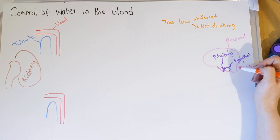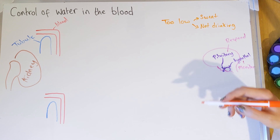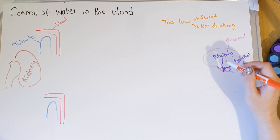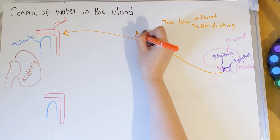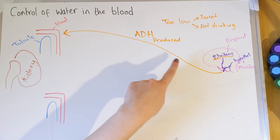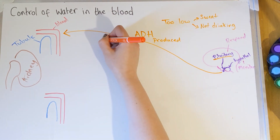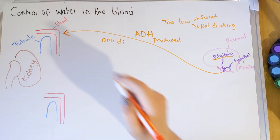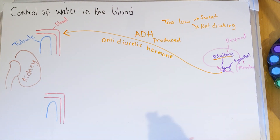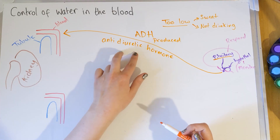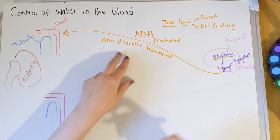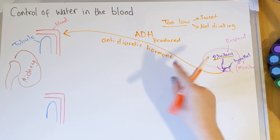Those conditions cause your blood water levels to go down. The hypothalamus detects this and causes the pituitary gland to release a hormone targeting the kidney — that hormone is called ADH. The pituitary gland produces ADH, which targets the kidney. ADH stands for anti-diuretic hormone.